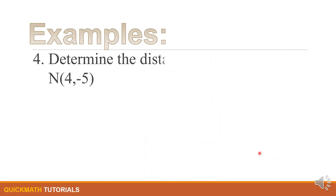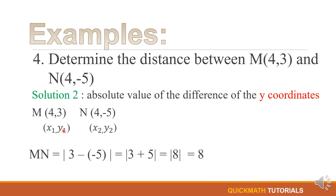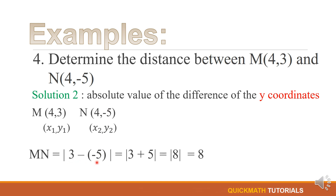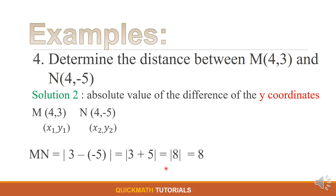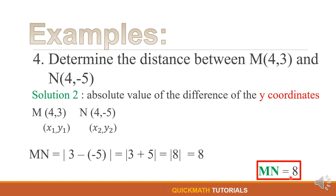For solution number 2, we have the absolute value of the difference of the y-coordinates. So we will just get the absolute value of the difference of the y-coordinates. In this example, the y-coordinates are 3 and negative 5. So we have the absolute value of 3 minus negative 5. Negative times negative 5 gives positive 5. 3 plus 5 is 8, and the absolute value of 8 is equal to 8. Therefore, the distance between M and N is equal to 8 — the same answer as solution number 1.